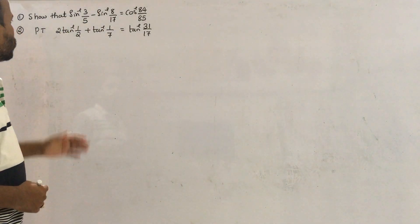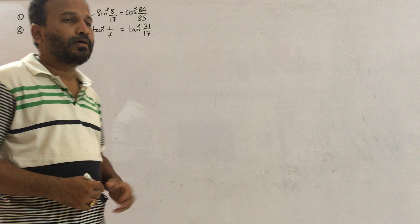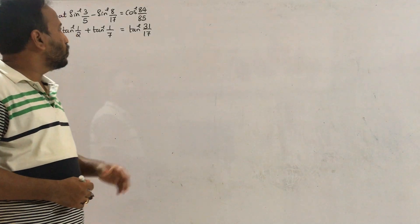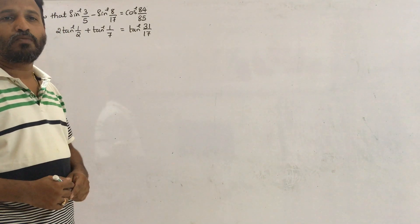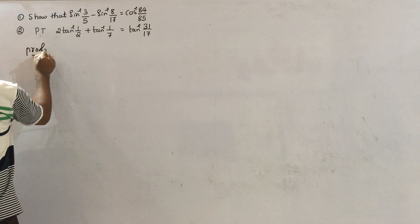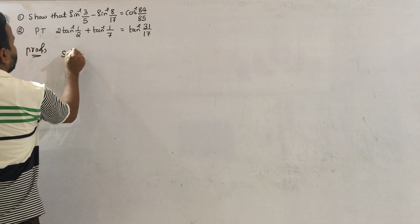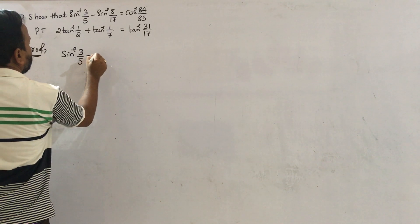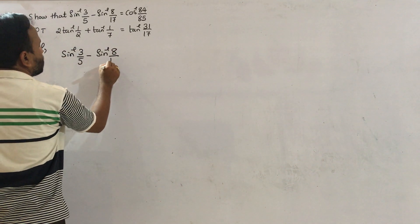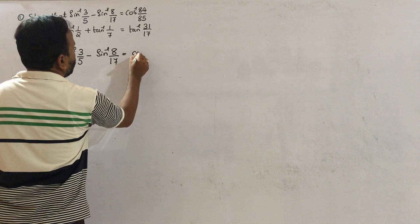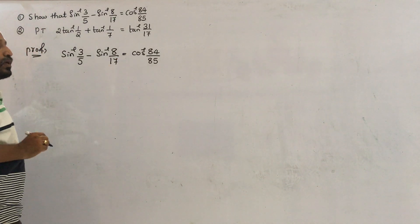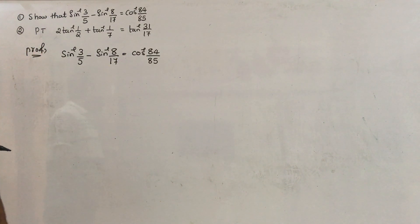First one: show that sin inverse of 3 by 5 minus sin inverse of 8 by 17 equals cos inverse of 84 by 85. We need to prove it. So, LHS equals sin inverse of 3 by 5 minus sin inverse of 8 by 17, and RHS equals cos inverse of 84 by 85. Prove it.